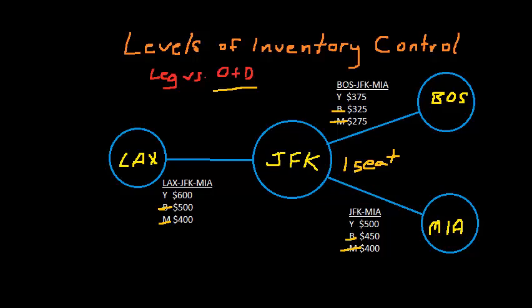You also need a different control mechanism with an O and D system. You can imagine that a large airline would have many, many different itinerary fare class combinations. It wouldn't be practical to set a booking limit for each one of those combinations. So instead, something called a bid price is used as the control. And we'll talk about that when we talk about network optimization models.